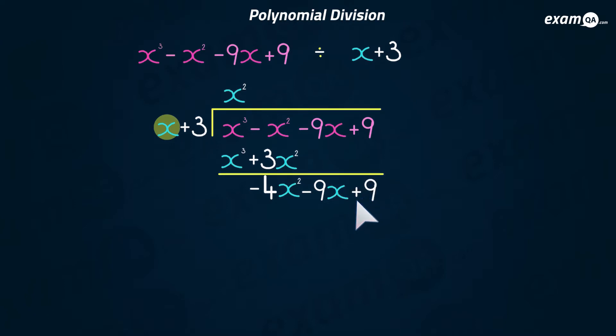Now we're going to do it all over again. Before we continue, if you're doing this for the first time, just rewind and watch it again up to this point. Next we're going to turn the x into this minus four x squared. Even if you rewind and watched it five times, it wouldn't be too many, so go ahead and do it if you need to.